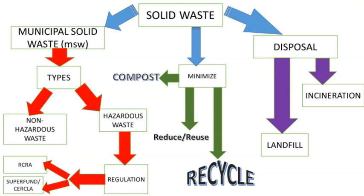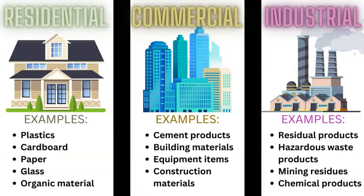There are also regulations — rules put in place by the United States at a state, county, or federal level to combat this waste and to properly manage how to dispose and recycle it. Non-hazardous waste has three different sections based on where the waste is coming from — the source or origin — which is going to be residential, commercial, and industrial. These three types of waste production differ greatly in what is being disposed of as trash.